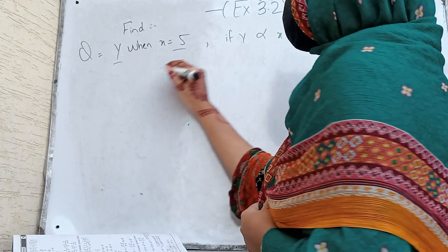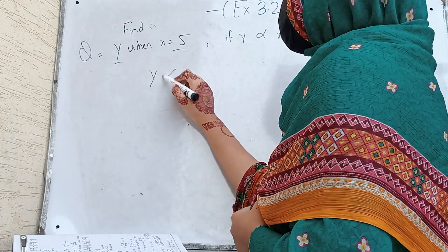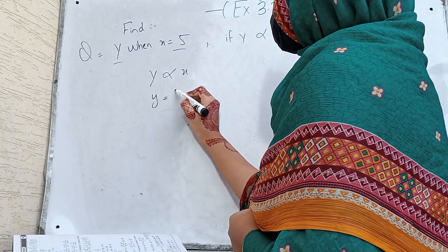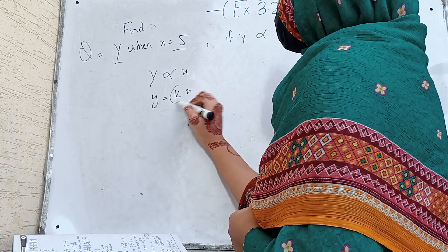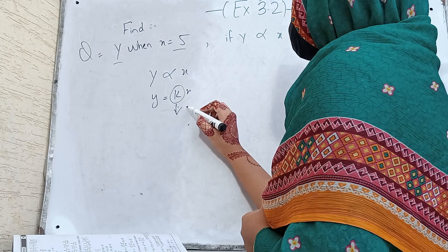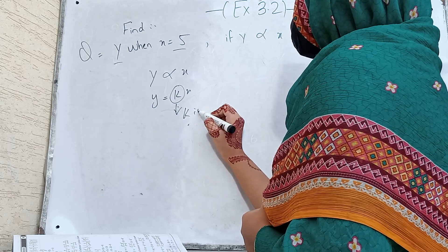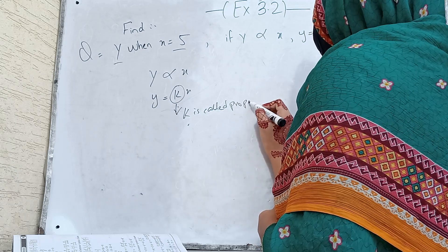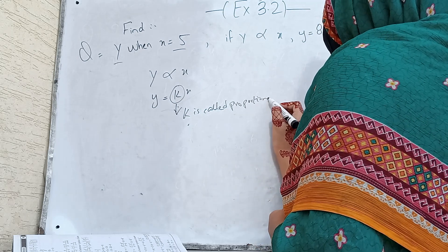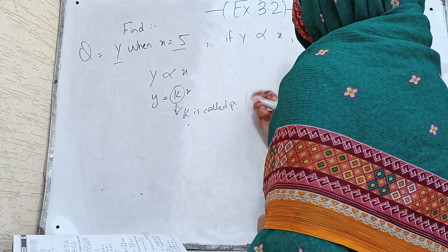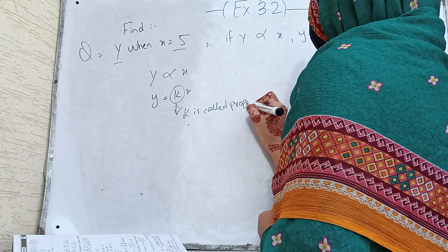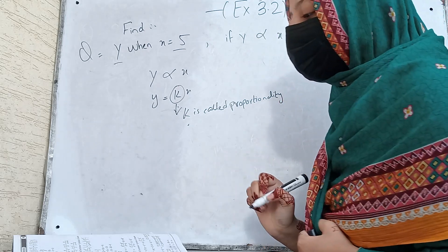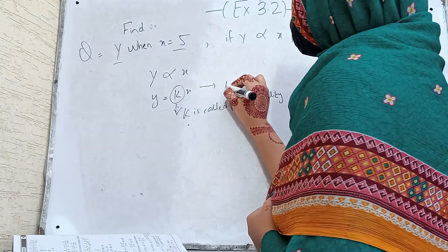We know from the statement that y is directly proportional to x, and y is equal to kx, where k is the proportionality constant. So y is equal to kx — this is the first equation.